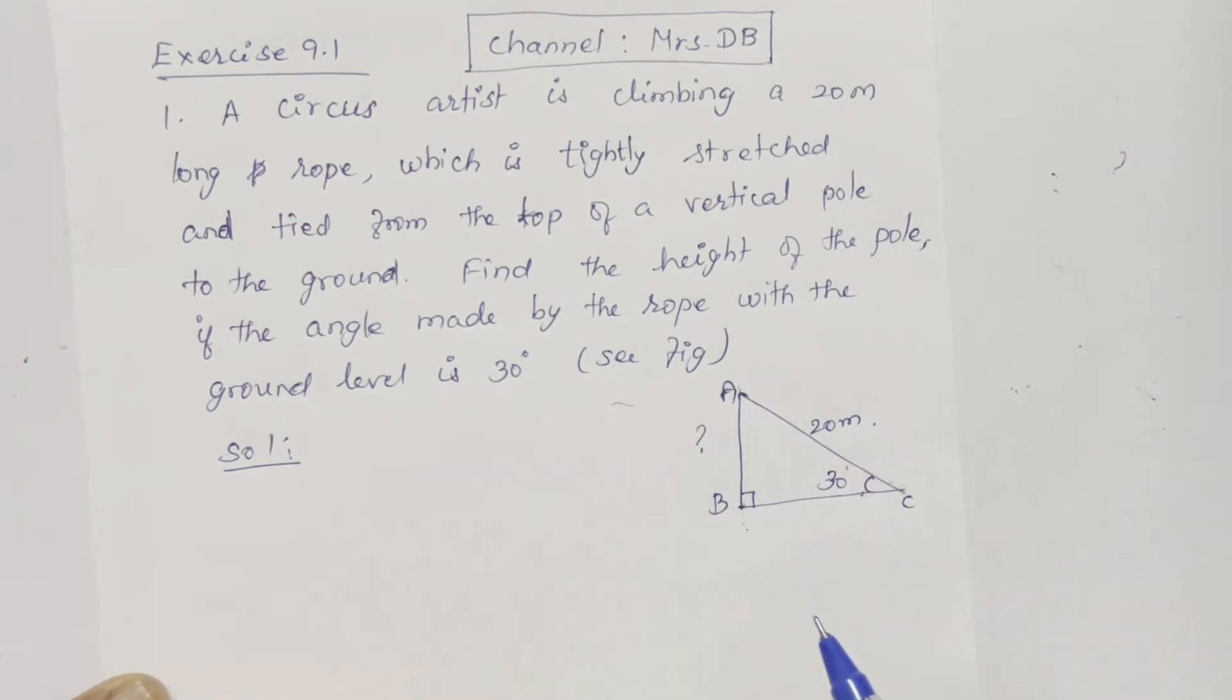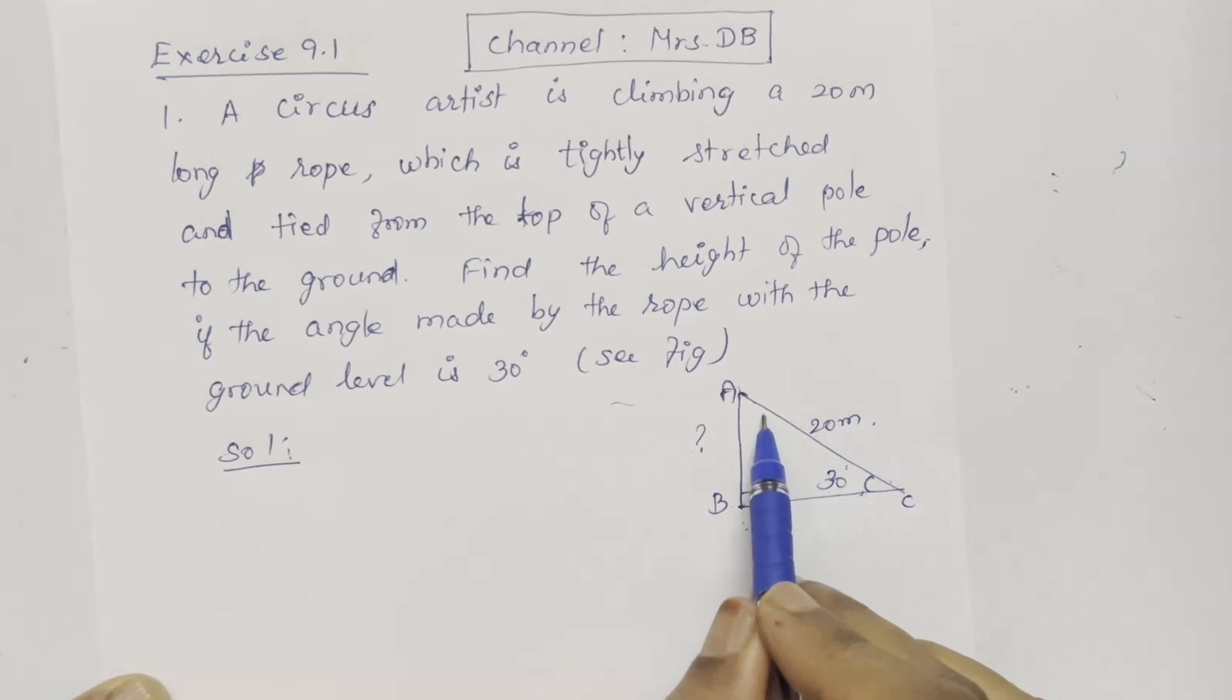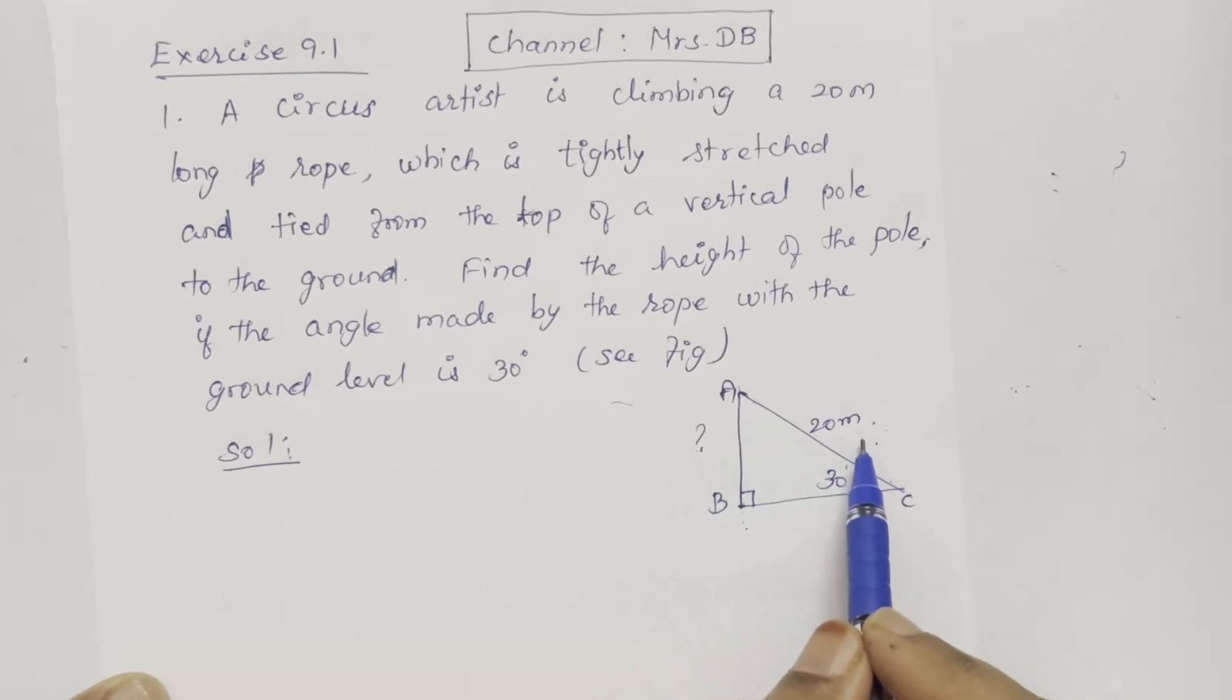This angle is opposite, so opposite side. Hypotenuse is the length of the rope. Then opposite side and hypotenuse connect a trigonometric ratio.